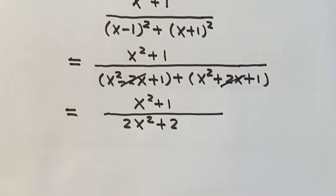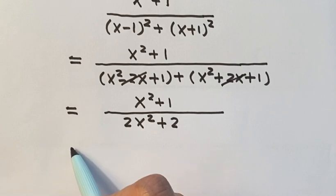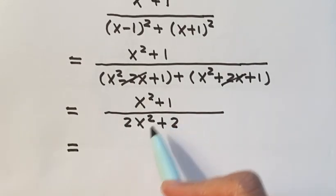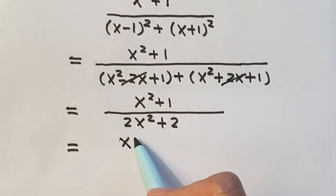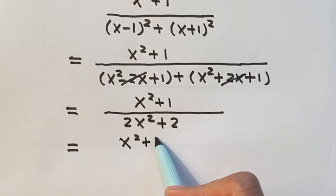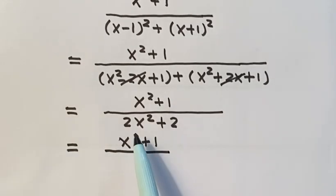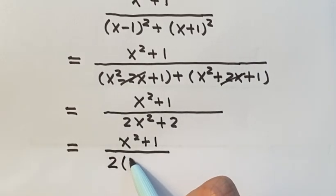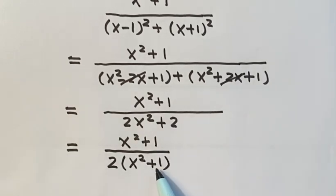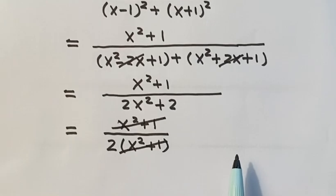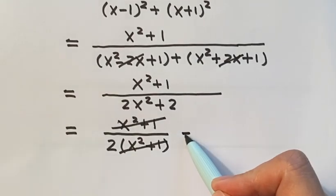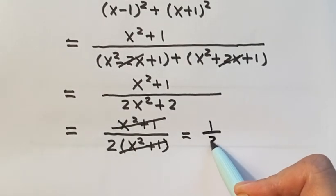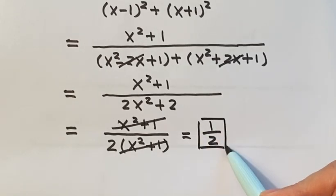Okay, so continue to simplify this one because the bottom, we have a common factor. We have a common factor, so we take out 2. Then we have x squared plus 1. So x squared plus 1 cancels out with the numerator. So now we have an answer that is 1 over 2.